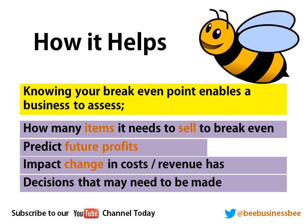So how does break-even help a business? Well, typically it tells you how many items you need to sell to break even — so how many items you've got to sell in your shop to break even. You can use it to predict your potential future profits or how much you're going to make. You can also use it to see how any changes in costs or your selling price is going to impact on your organisation. So if your cost was increased, how will it impact on how many items you need to sell to break even? Or if you were to increase your selling price, how will that impact on your break-even point? And you can also use it to make decisions within your business, seeing how you might want to change and adapt your organisation.